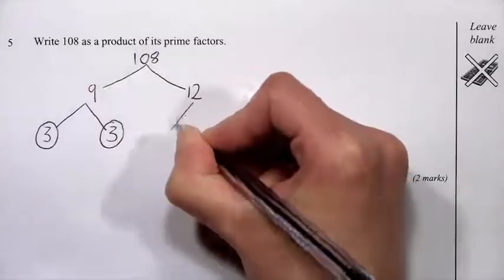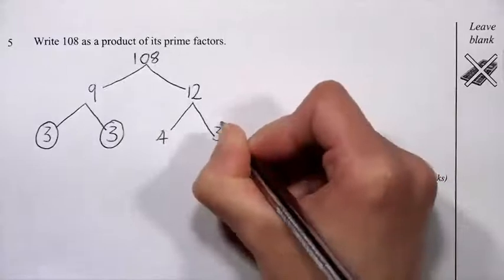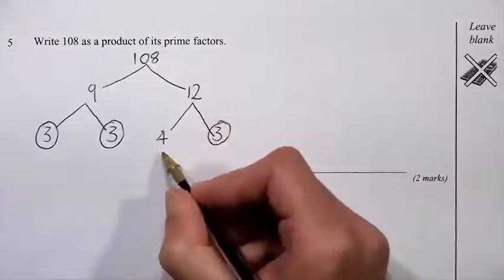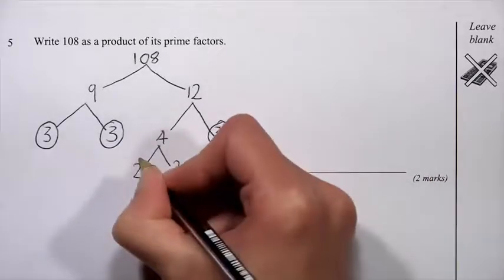And I can write 12 as 4 times 3. And again, I'll put a ring round the 3 because it's a prime. 4 isn't a prime, but I can write it as 2 times 2, and 2 is a prime.